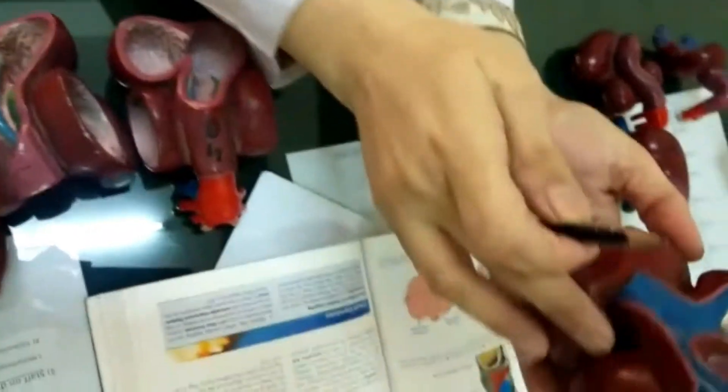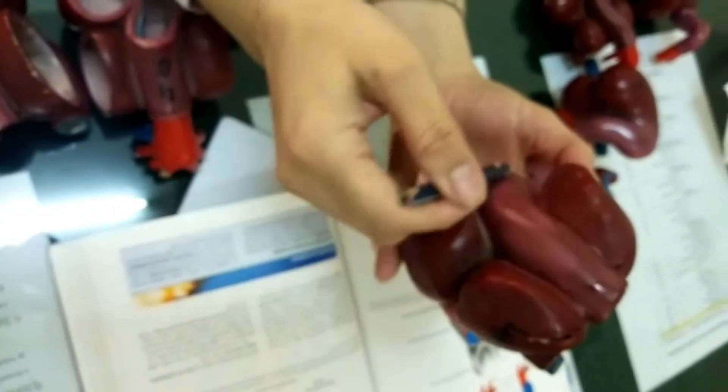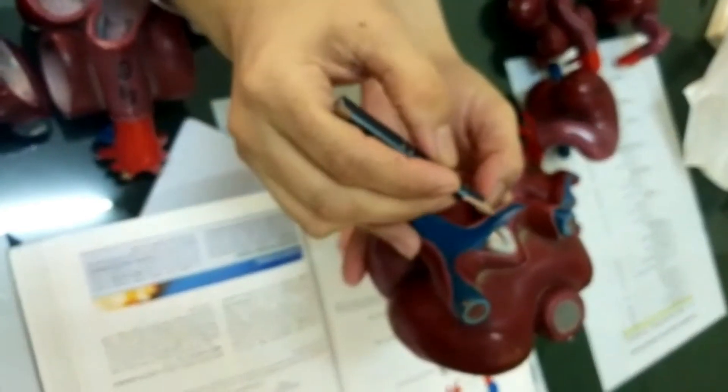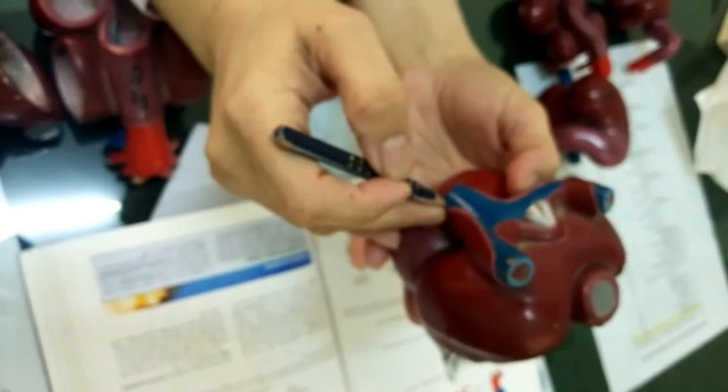In this diagram, further changes. Anteriorly you can see the conotruncal region, then the right and the left ventricle and interventricular groove externally. On both sides you can see atrial swellings. This is the coronary sinus after changes of the sinus venosus, superior and inferior vena cava.